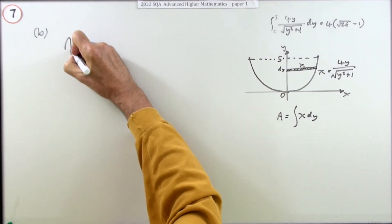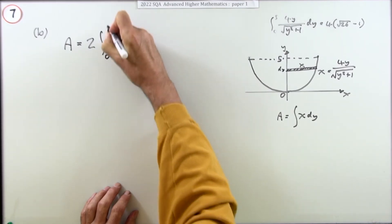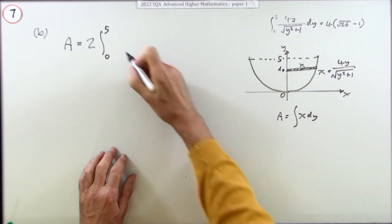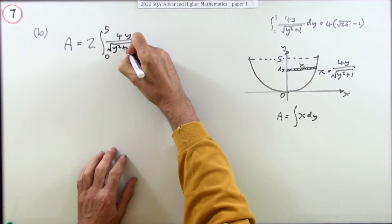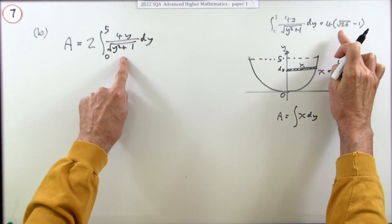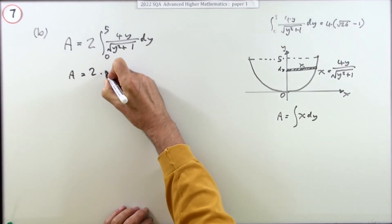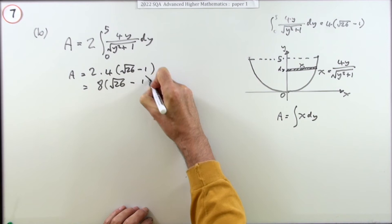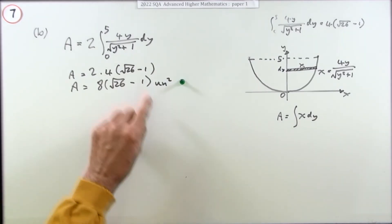The area is twice the integral in the first quadrant, from 0 to 5, of x dy. Substituting x = 4y / √(y² + 1), this is exactly the integral from Part (a). The answer to that was 4(√26 − 1), so the area equals 2 × 4(√26 − 1) = 8(√26 − 1) units squared. Just identifying this connection earns the mark.